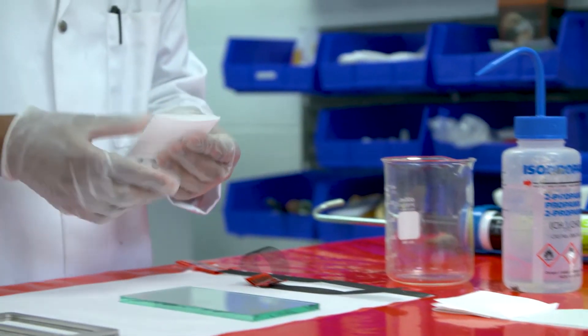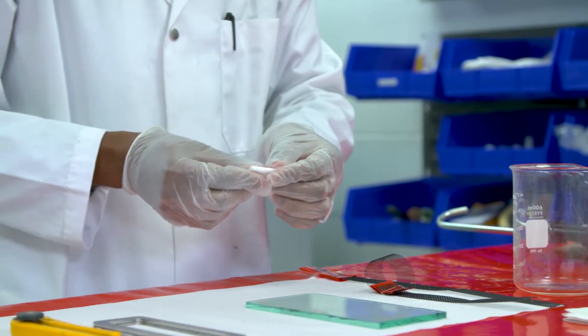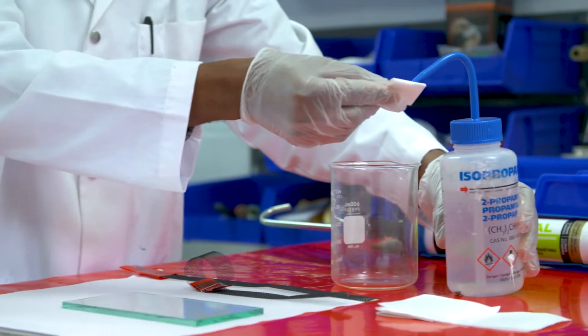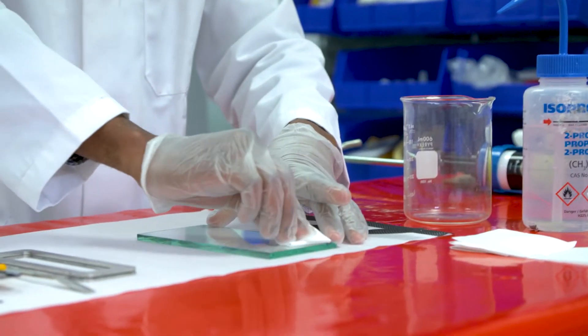The first step is to wash the substrate with Adseal Cleaner 6003 solvent. It's important to wait roughly 20 minutes for the solvent to evaporate completely.